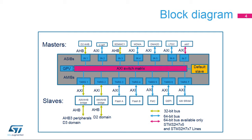The ASIBs are connected to the AMIBs via an AXI switch matrix. Each ASIBS is a slave on an AXI or AHB bus — Advanced High-performance Bus. Similarly, each AMIBS is a master on an AXI or AHB bus.